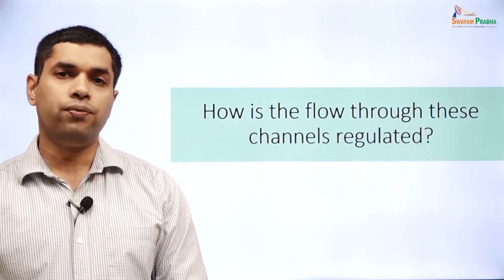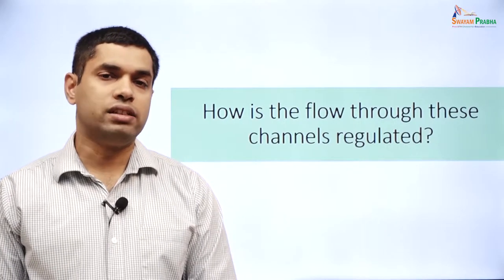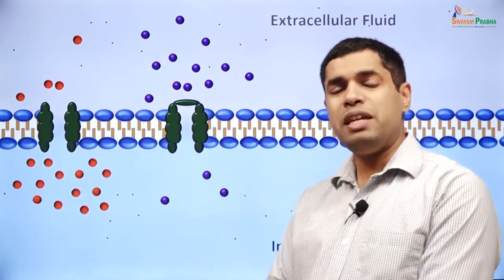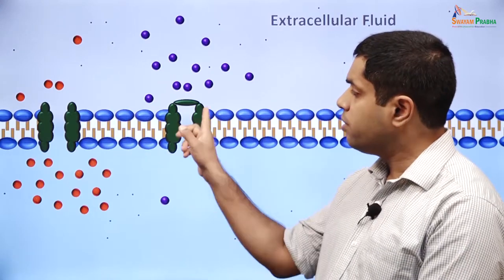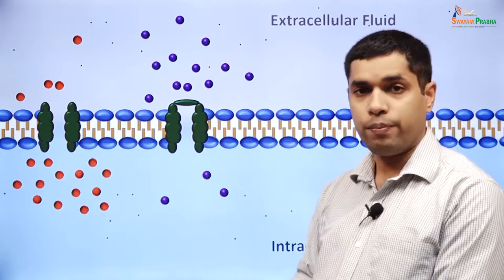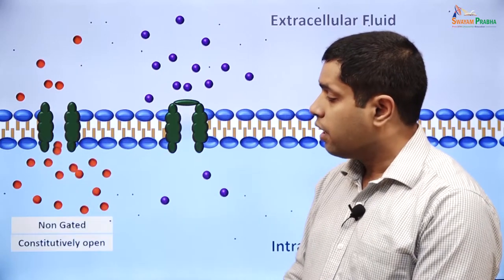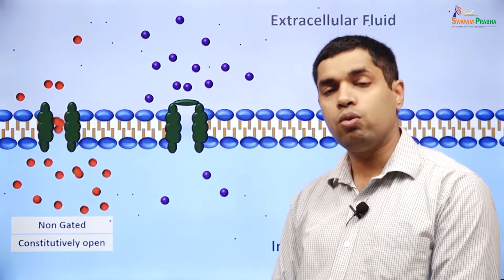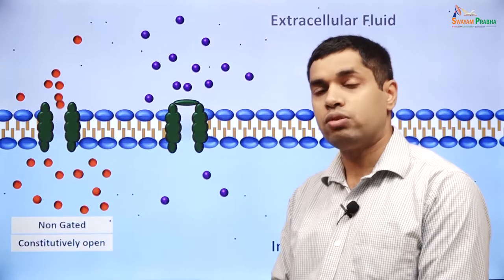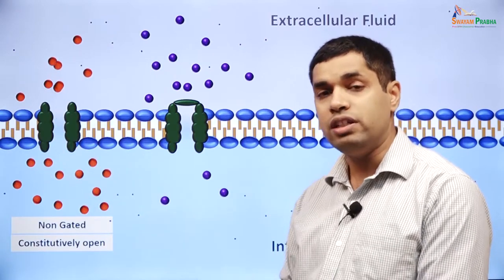We will now look at how the flow of ions through these channels is regulated — sometimes called gating. We can broadly divide ion channels into channels that are regulated or gated, or channels that are not regulated or non-gated channels. When we talk about a gate, we are talking about some structural component on the channel that regulates flow through it. A non-gated channel does not regulate the flow of ions. Non-gated channels are also called constitutively open channels because they are open at all times. Ions will continue to move as long as the electrochemical gradient for that particular ion is favourable. These kinds of channels contribute to the resting membrane permeability for the different ions.